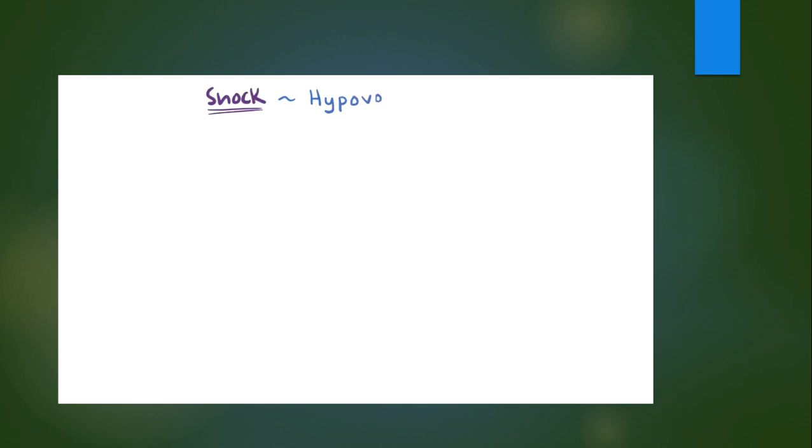The first category is called hypovolemic shock. Hypo means low, vol refers to volume, and emia refers to the blood. So hypovolemic shock is shock induced by a low fluid volume of blood, and this could be either non-hemorrhagic or hemorrhagic.